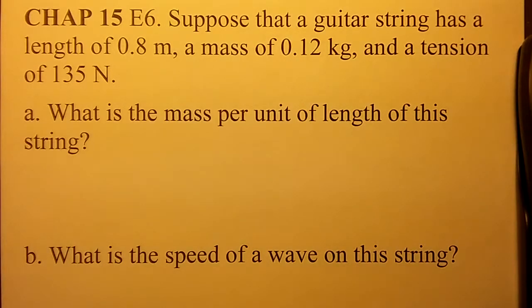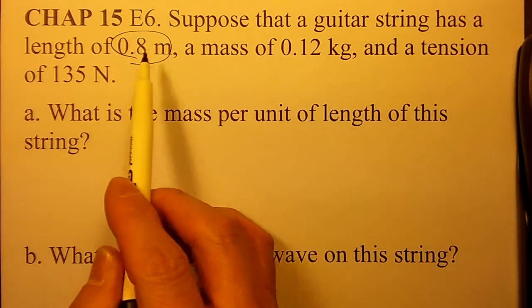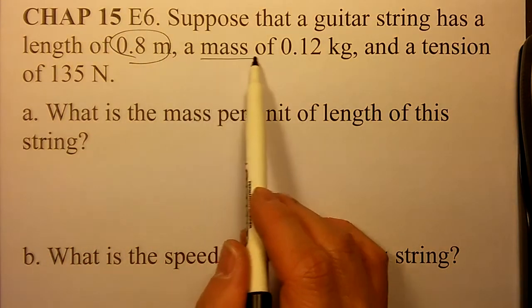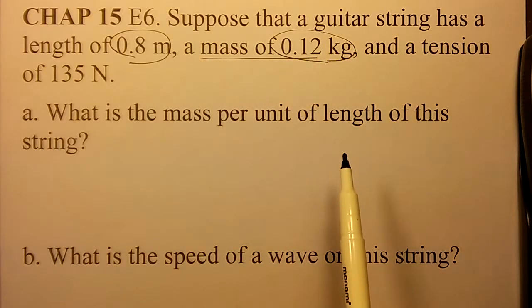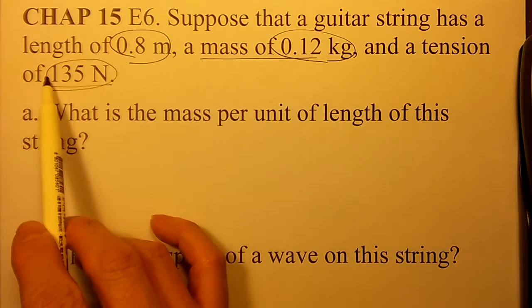In E6, suppose the guitar string has a length of 0.8 meter, a mass of 0.12 kilogram, and a tension of 135 newton.